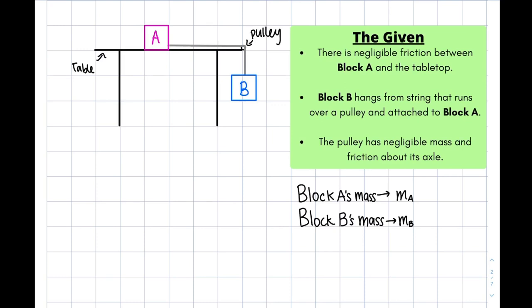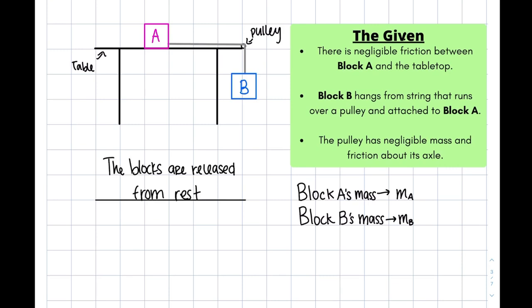This is our example. The given states there is negligible friction between block A and the tabletop. Block B hangs from a string that runs over a pulley and is attached to block A. The pulley has negligible mass and friction about its axle. Blocks A and B's mass is MA and MB. Now let's say that the blocks are released from rest. Release from rest indicates that the initial variables, such as velocity, are zero.